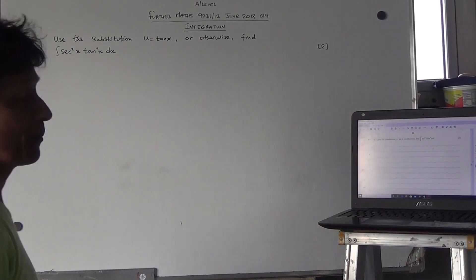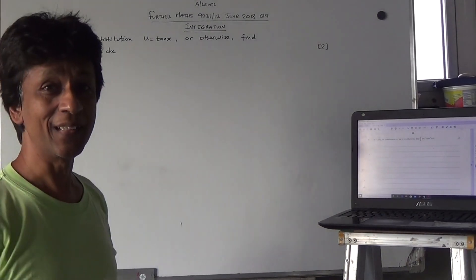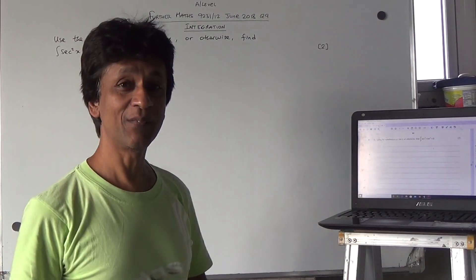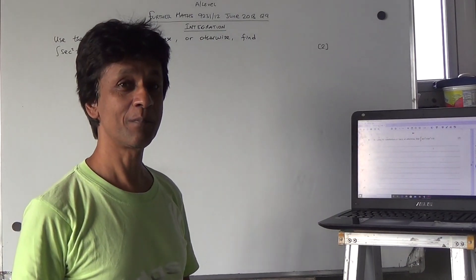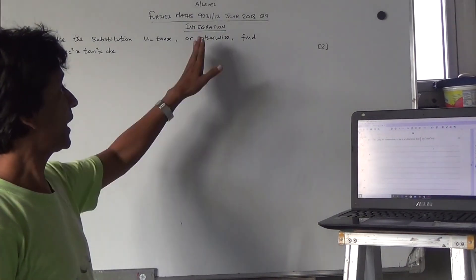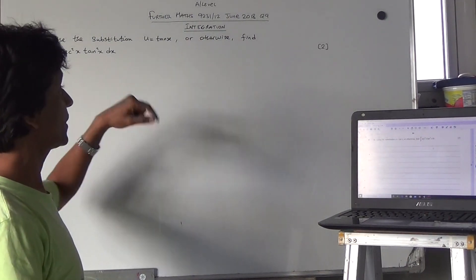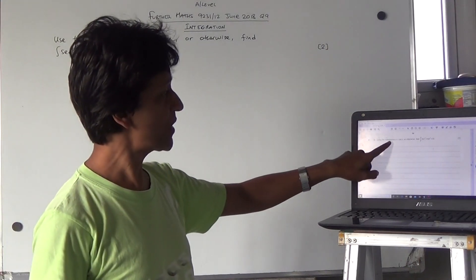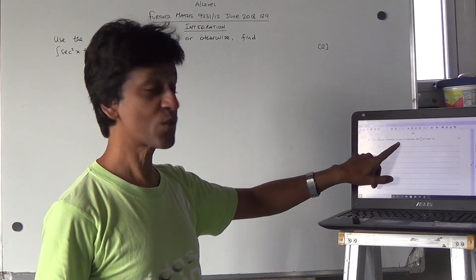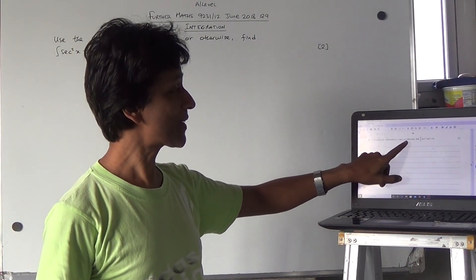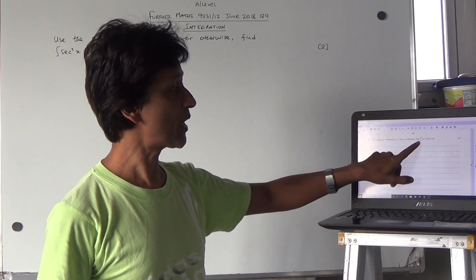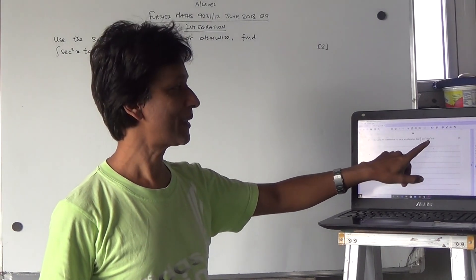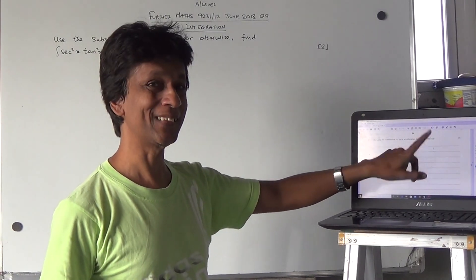Our question today is coming from the Further Maths A-level paper. We're going to look at question number 9 here: using the substitution u = tan x, or otherwise, find the integral of sin²x · tan²x dx.